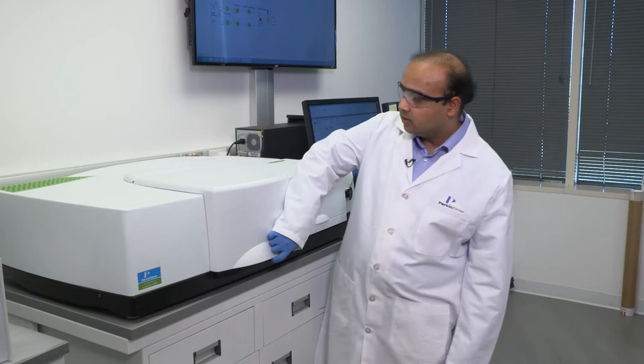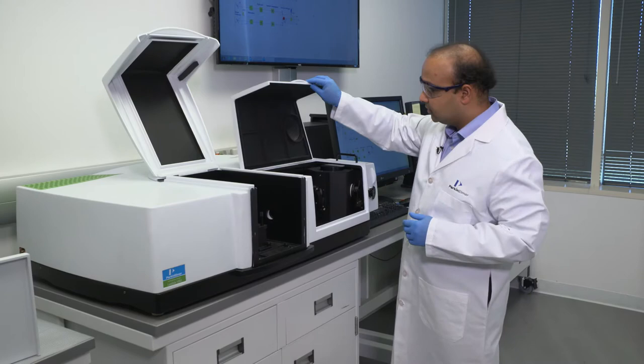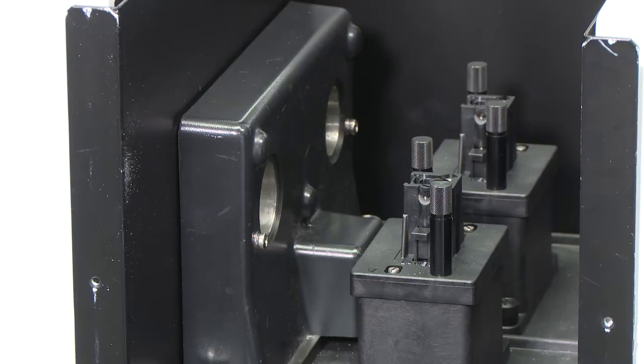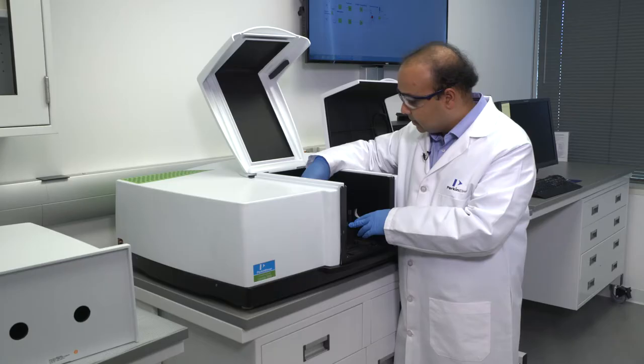Specifically, the accessory we're discussing today is our 150 millimeter integrating spheres. So on the Lambda 1050, there are usually two parts that we're going to draw your attention to. This is a modular arrangement here, the sample compartment here.